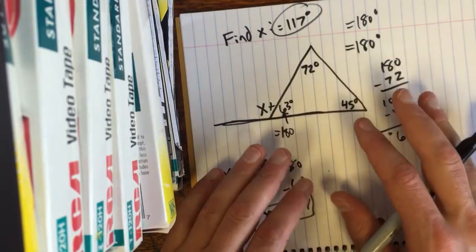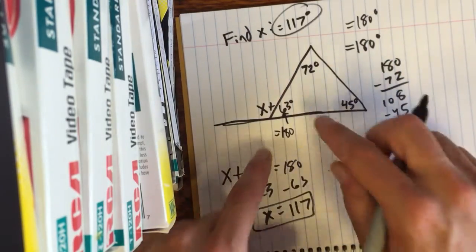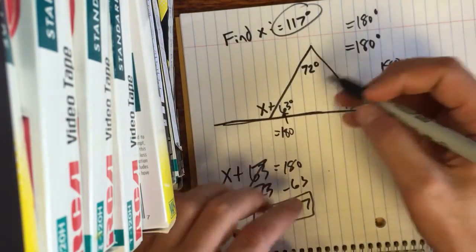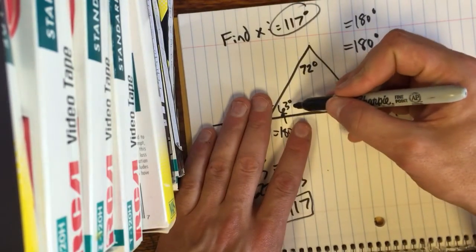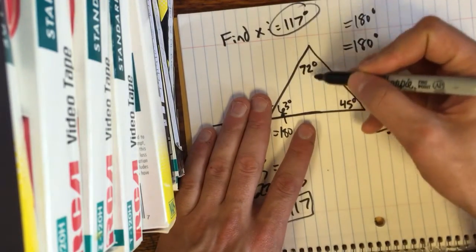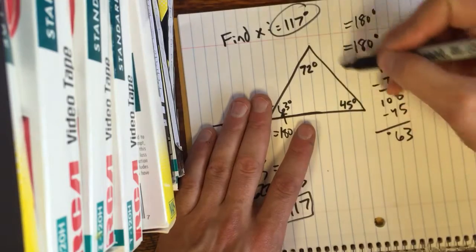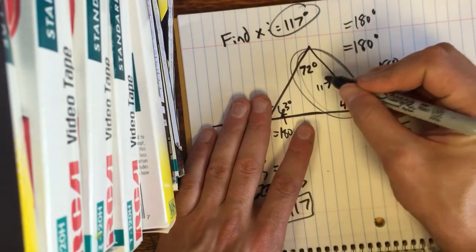Now, there is a shorter way that I want to show you a little shortcut on. The rule here, you're essentially subtracting. Like if I take 63 and I subtract it from 180, I know that I'm going to be left with the sum of these two little guys, which is going to be 117.